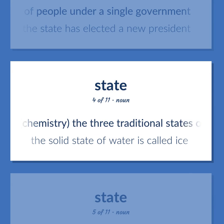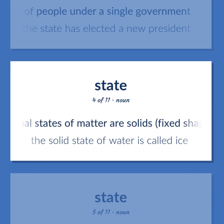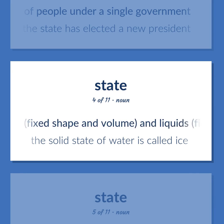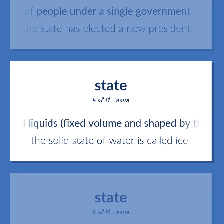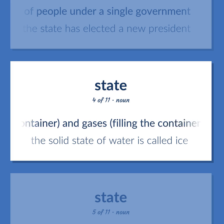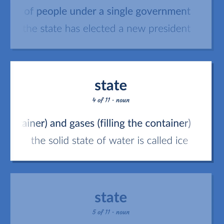State — Chemistry: the three traditional states of matter are solids (fixed shape and volume), liquids (fixed volume and shaped by the container), and gases (filling the container). The solid state of water is called ice.